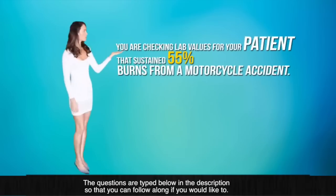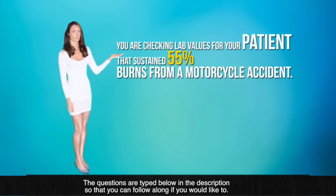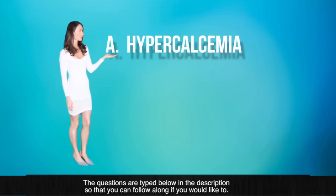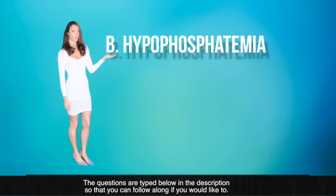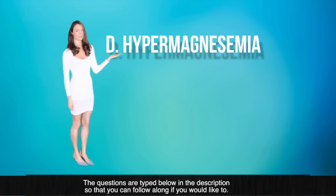Question number two. You are checking lab values for your patient that has sustained 55% burns from a motor vehicle accident. You might expect which electrolyte imbalance? A. Hypercalcemia. B. Hypophosphatemia. C. Hypernatremia. Or D. Hypermagnesemia.